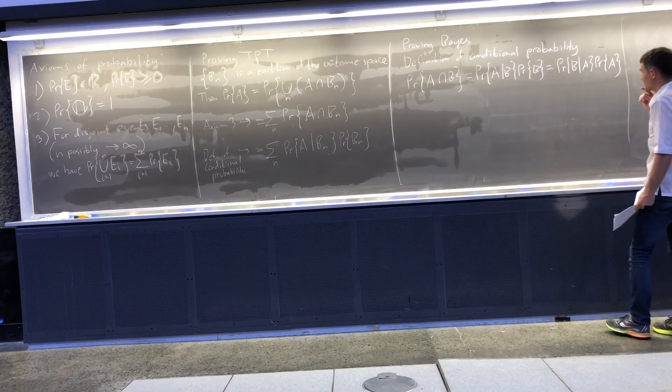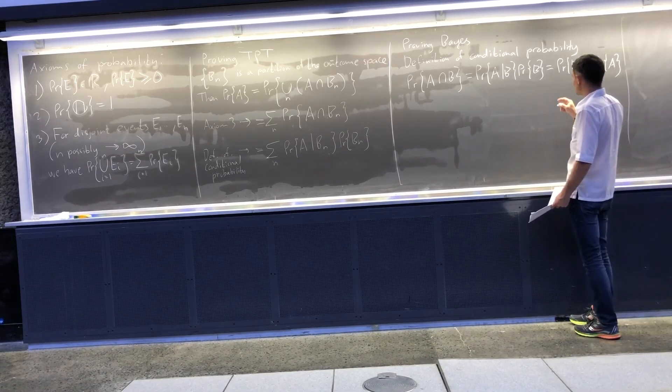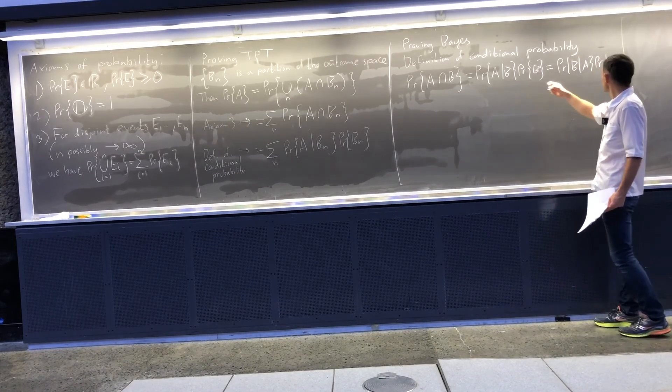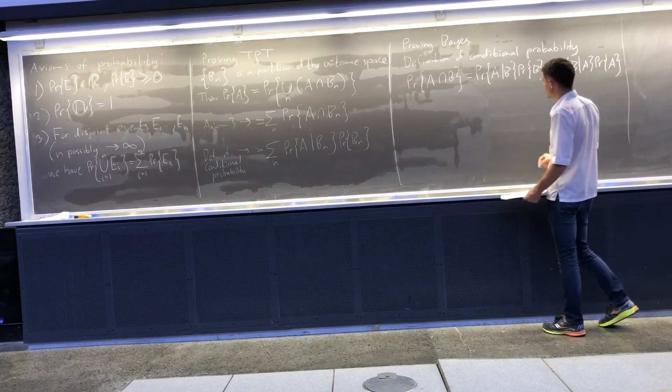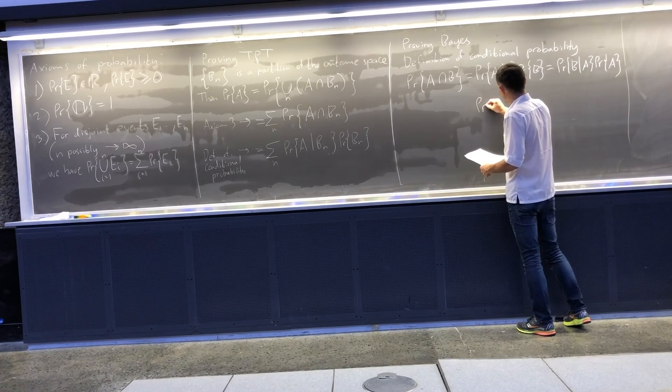Let me then divide by probability of B on both sides. If I do that, this is all I get on the left hand side. This thing was removed.